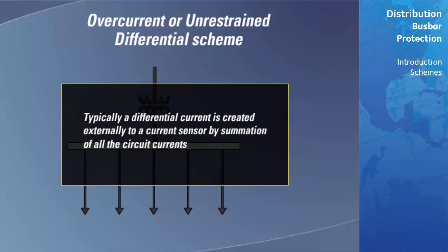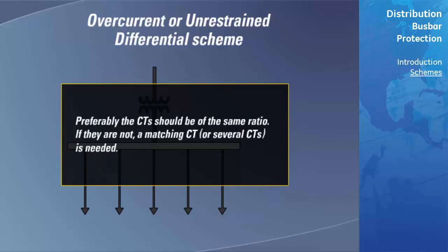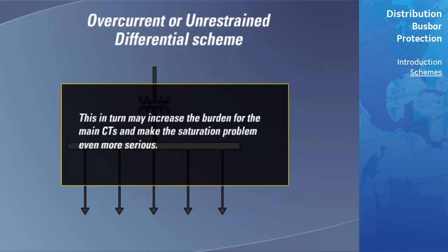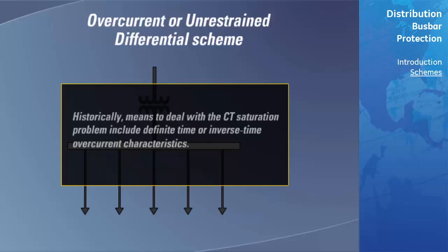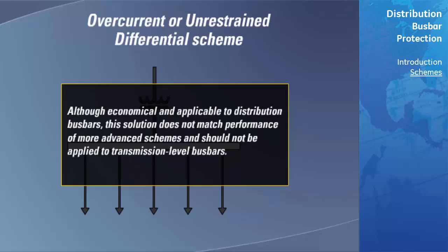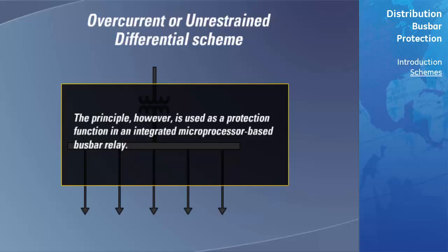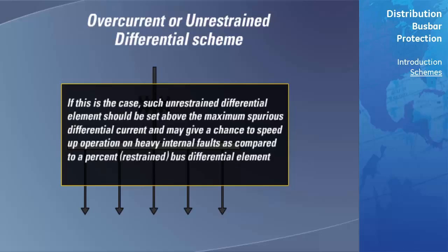Typically, a differential current is created externally to a current sensor by summation of all the circuit currents. Preferably, the CTs should be of the same ratio. If they are not, a matching CT or several CTs is needed, which may increase the burden for the main CTs and make the saturation problem even more serious. Historically, means to deal with the CT saturation problem include definite time or inverse time overcurrent characteristics. Although economical and applicable to distribution bus bars, this solution does not match the performance of more advanced schemes and should not be applied to transmission-level bus bars. The principle, however, is used as a protection function in an integrated microprocessor-based bus bar relay. In such cases, unrestrained differential elements should be set above the maximum spurious differential current and may speed up operation on heavy internal faults compared to a percent or restrained bus differential element.